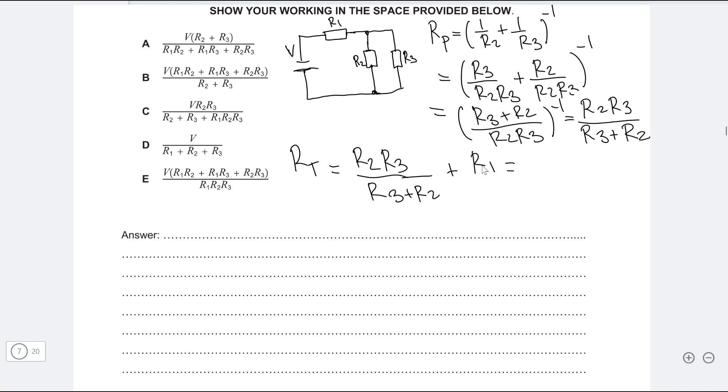Okay, now we need to do a little bit more algebra. So we need to multiply this side of the expression by R3 plus R2, both the top and the bottom of the fraction.